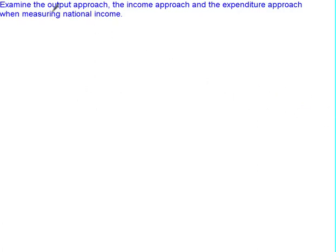In this video we're going to look at three different ways to calculate GDP: the output approach, the income approach, and the expenditure approach. Let's go ahead and jump into it, starting with the output approach.